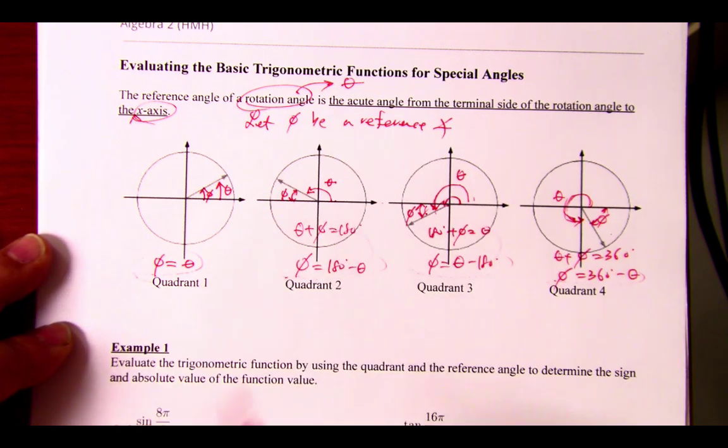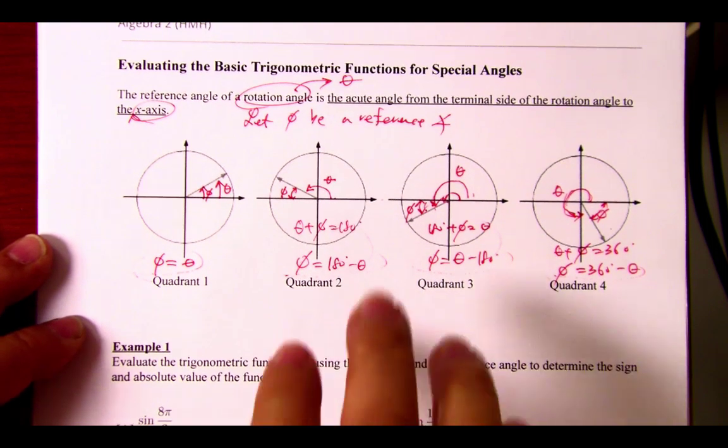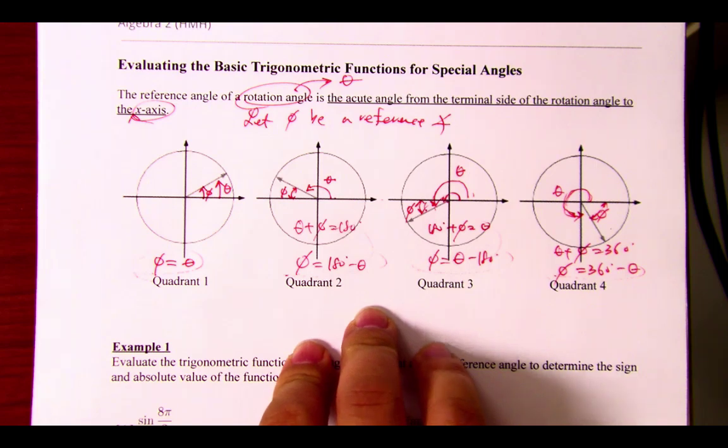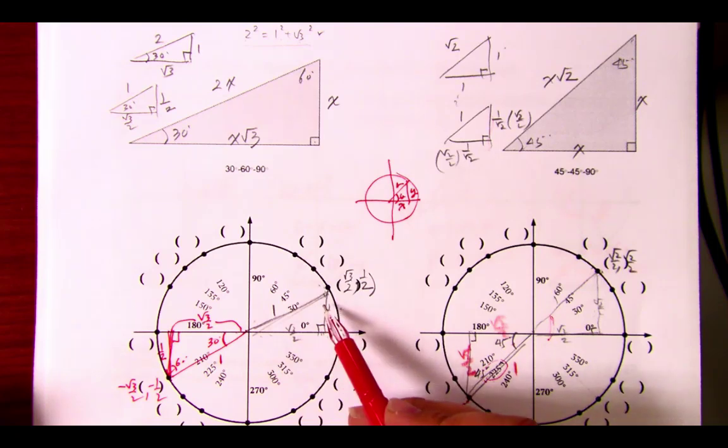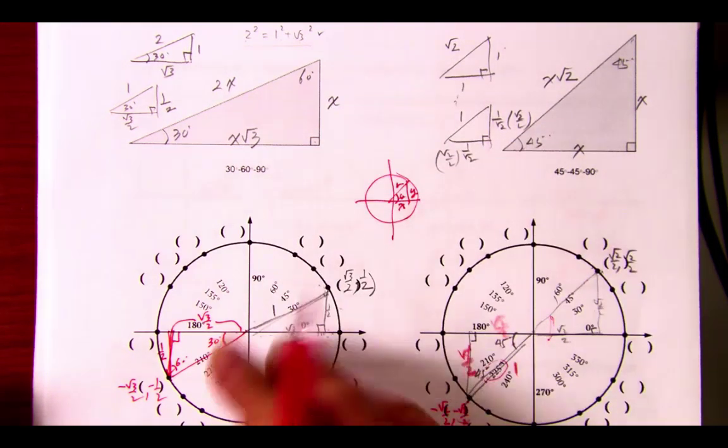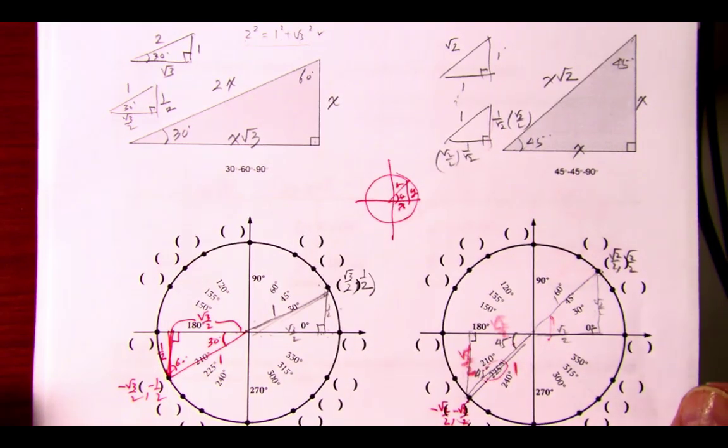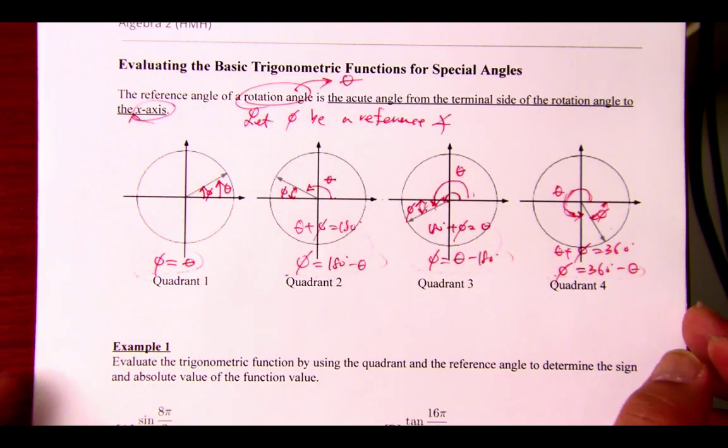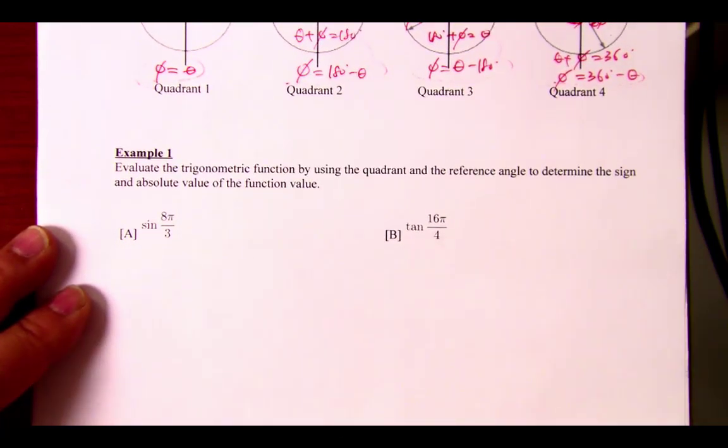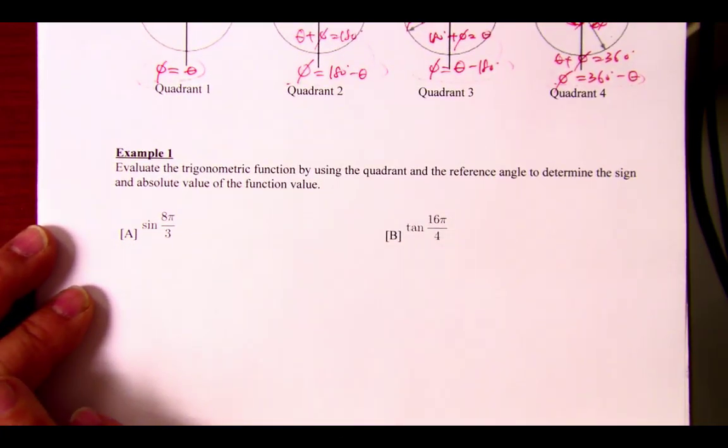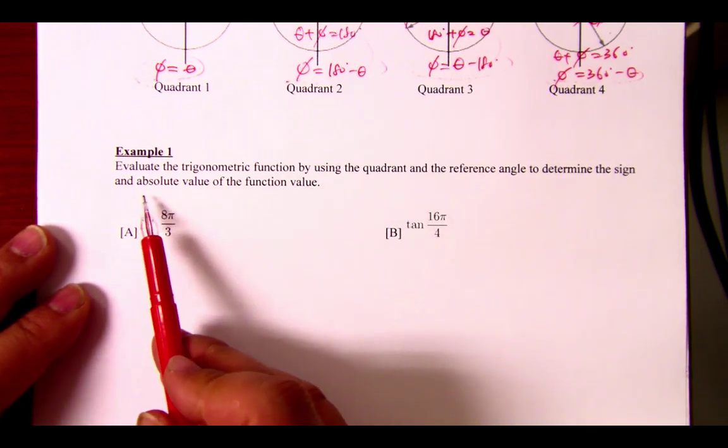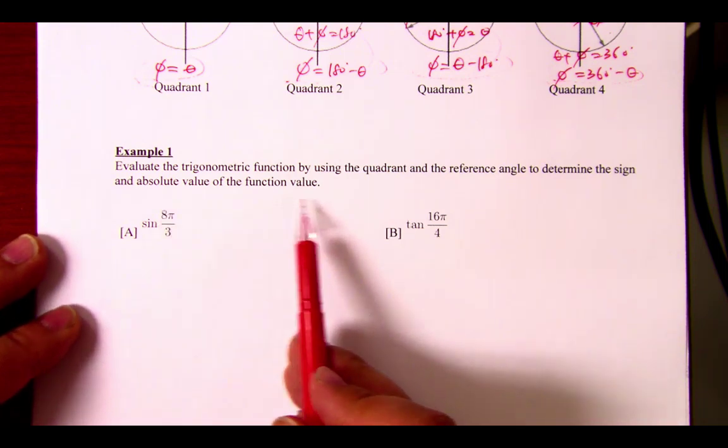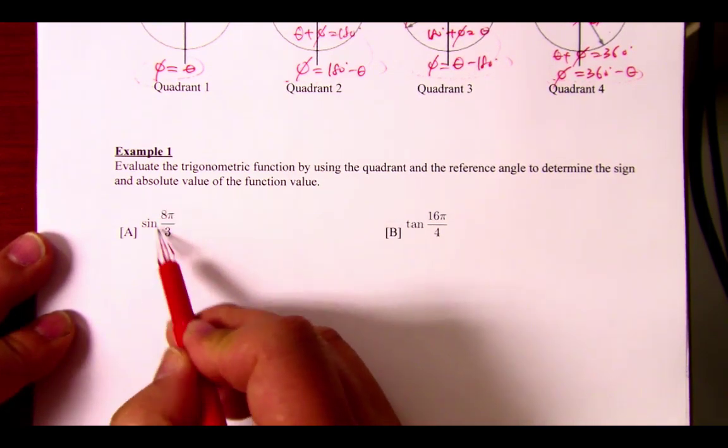While we could create these equations, committing this to memory is unnecessary simply because we could just draw it out. Why is this important? Because the reference angle that we have is the fact that we're drawing the special angles in each quadrant and using that ratio to figure things out. Let's do example 1A and B in class.